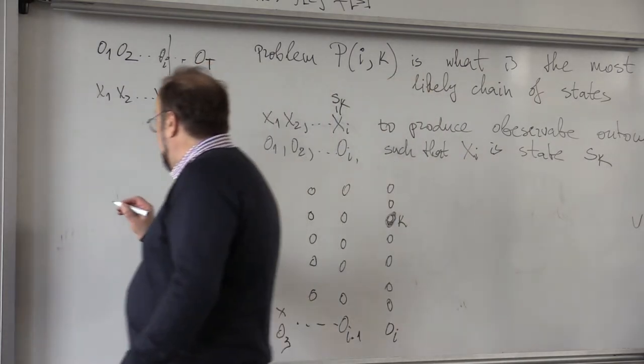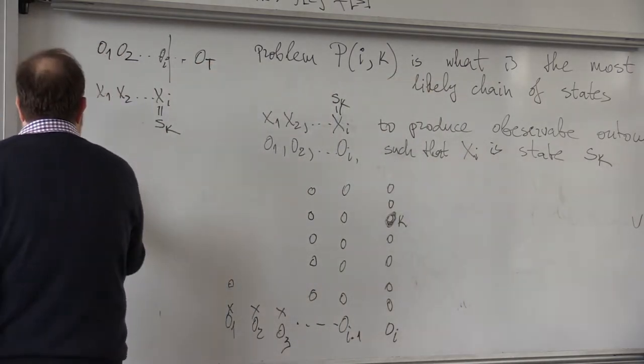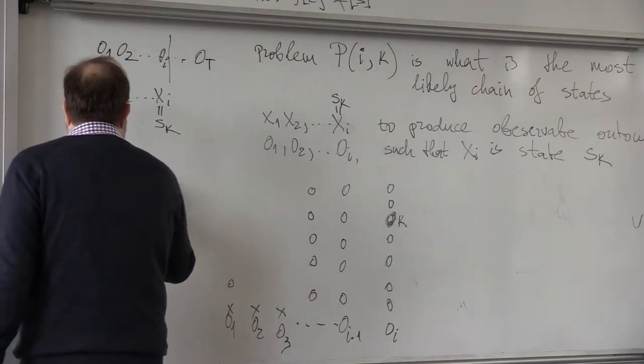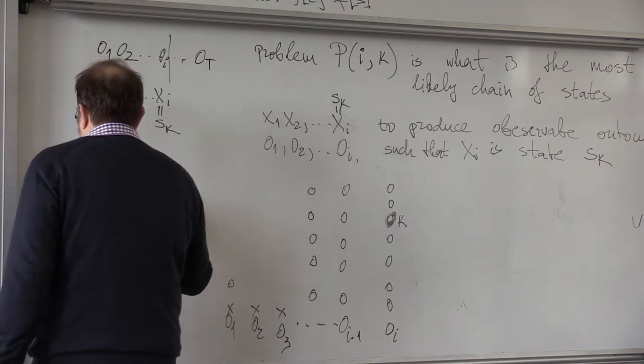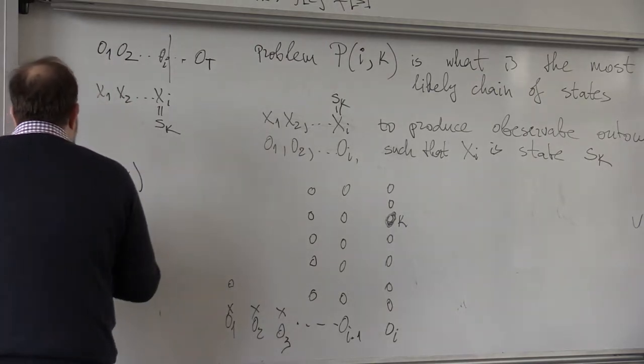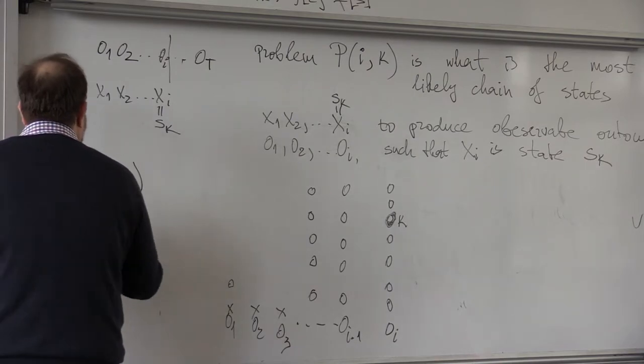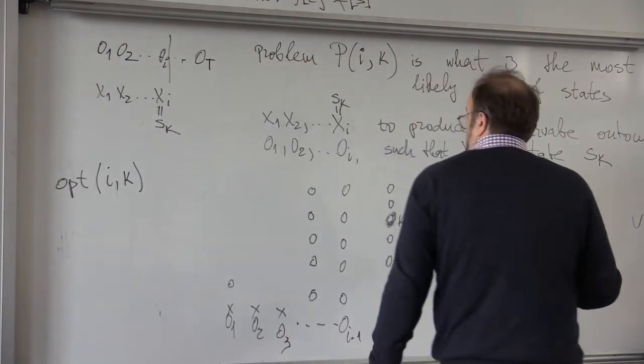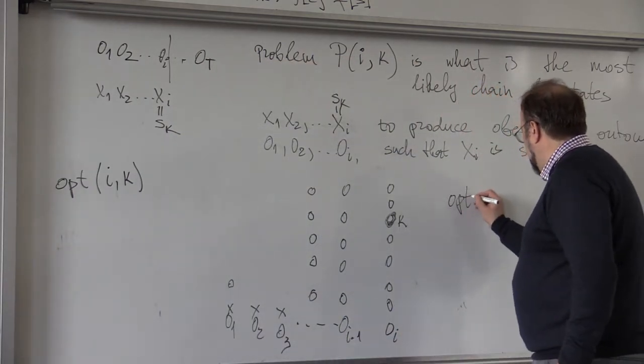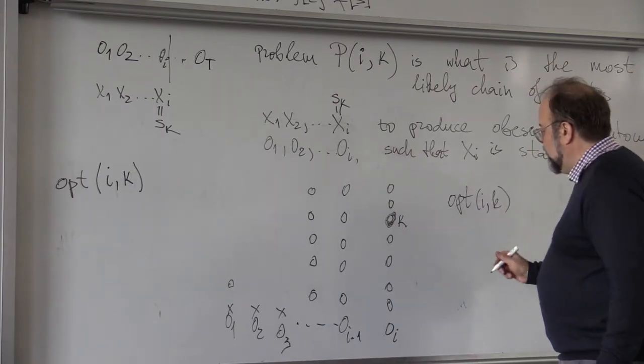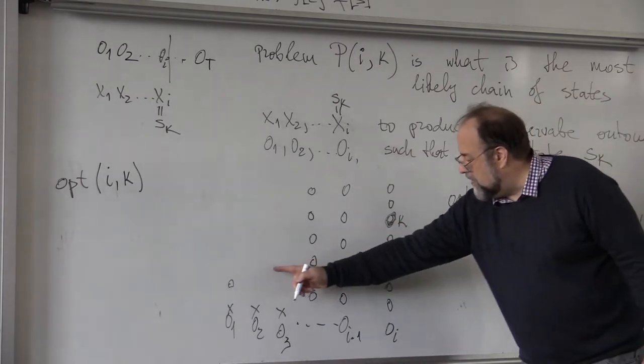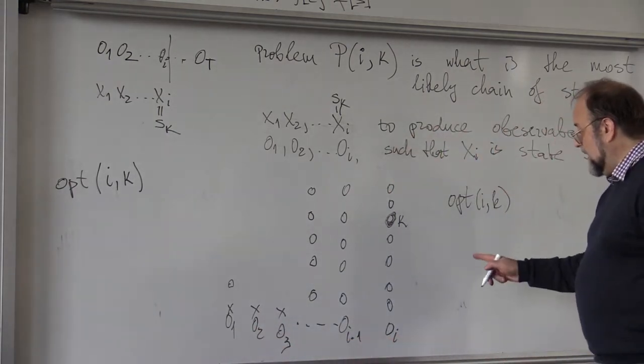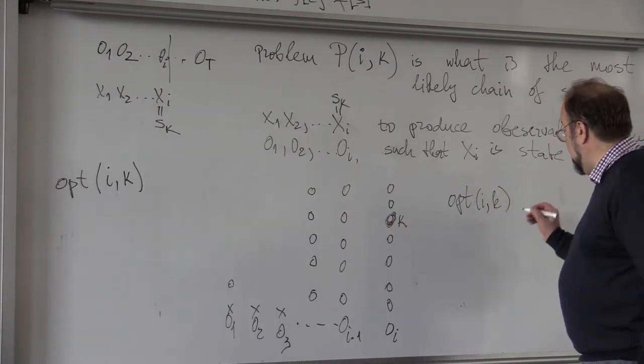So let's denote by probability PR, IK, or say call it OPT(I,K). What will be OPT(I,K), which is the most likely sequence of states that has these outcomes but ends up in a state SK.